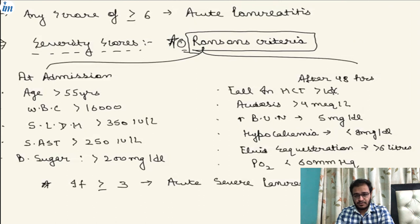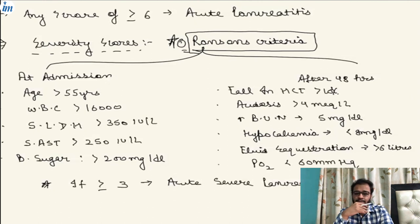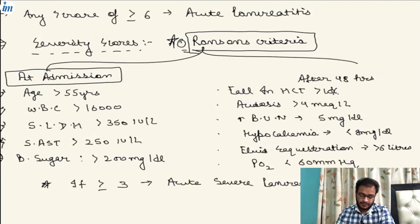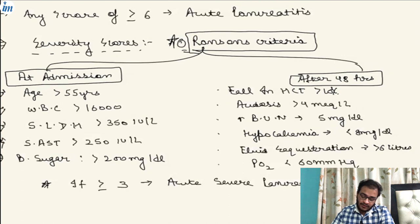At the time of admission, Ranson's criteria includes: age more than 55, WBC count more than 16,000, serum lactate dehydrogenase more than 350, serum alkaline phosphatase more than 250, and blood sugar level more than 200. These are the parameters filled on the admission chart. After 48 hours, we also look for additional parameters indicating acute pancreatitis — one is fall in hematocrit level more than 10%.